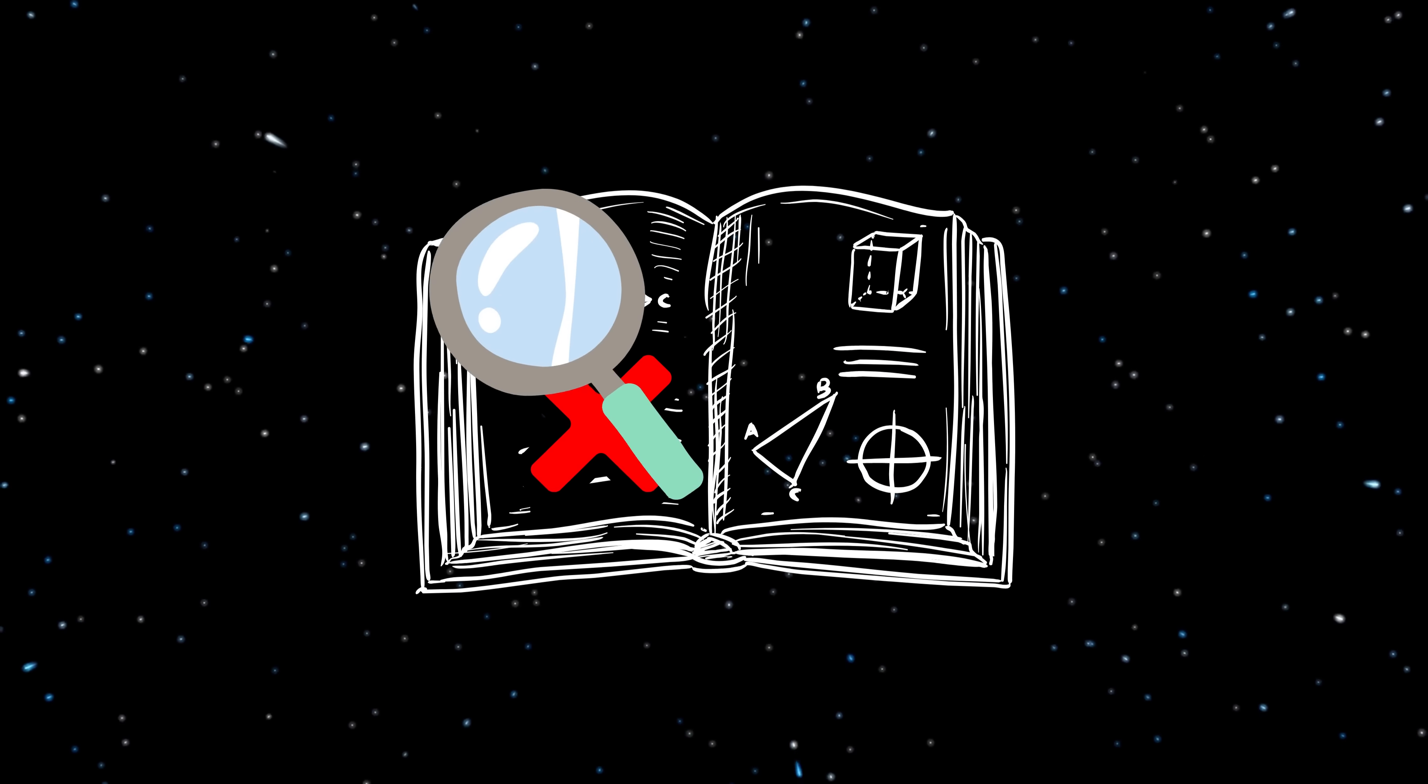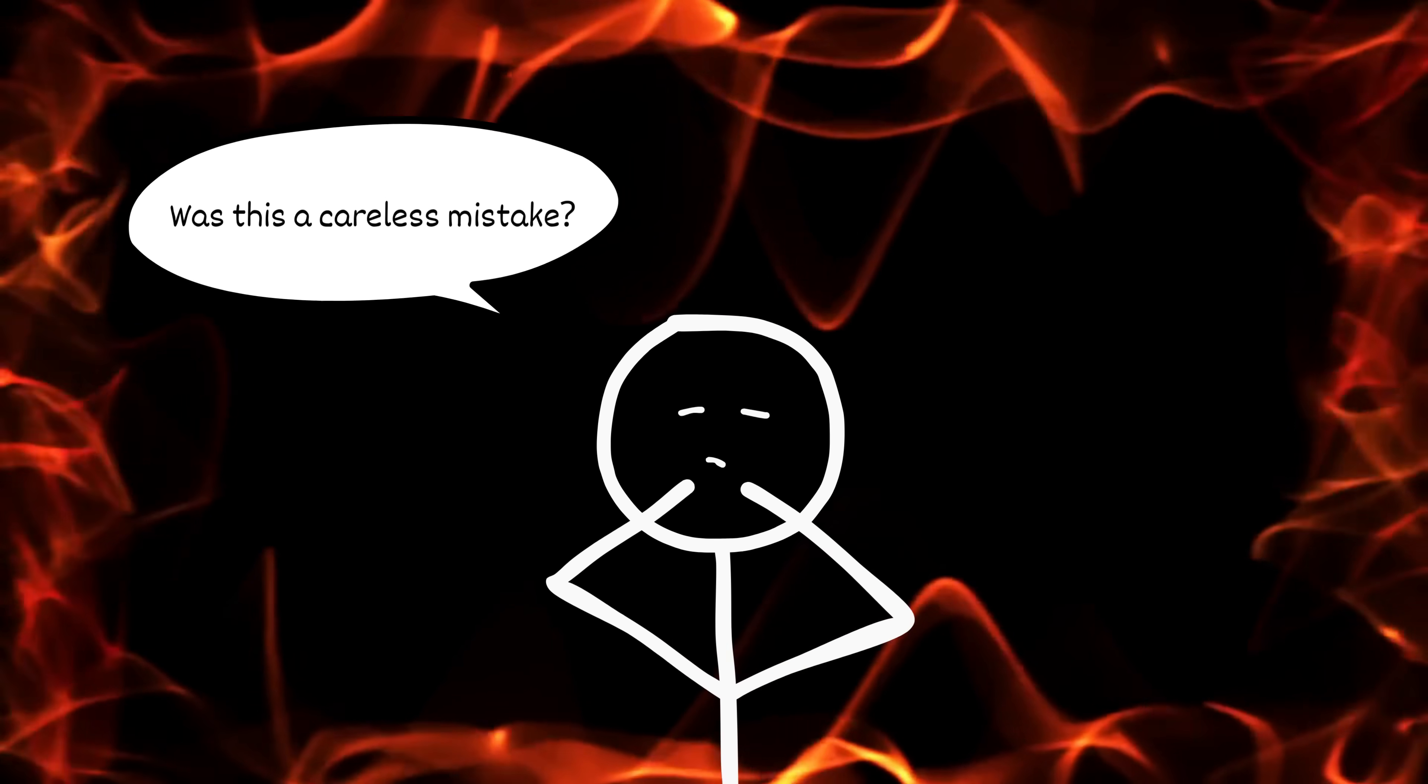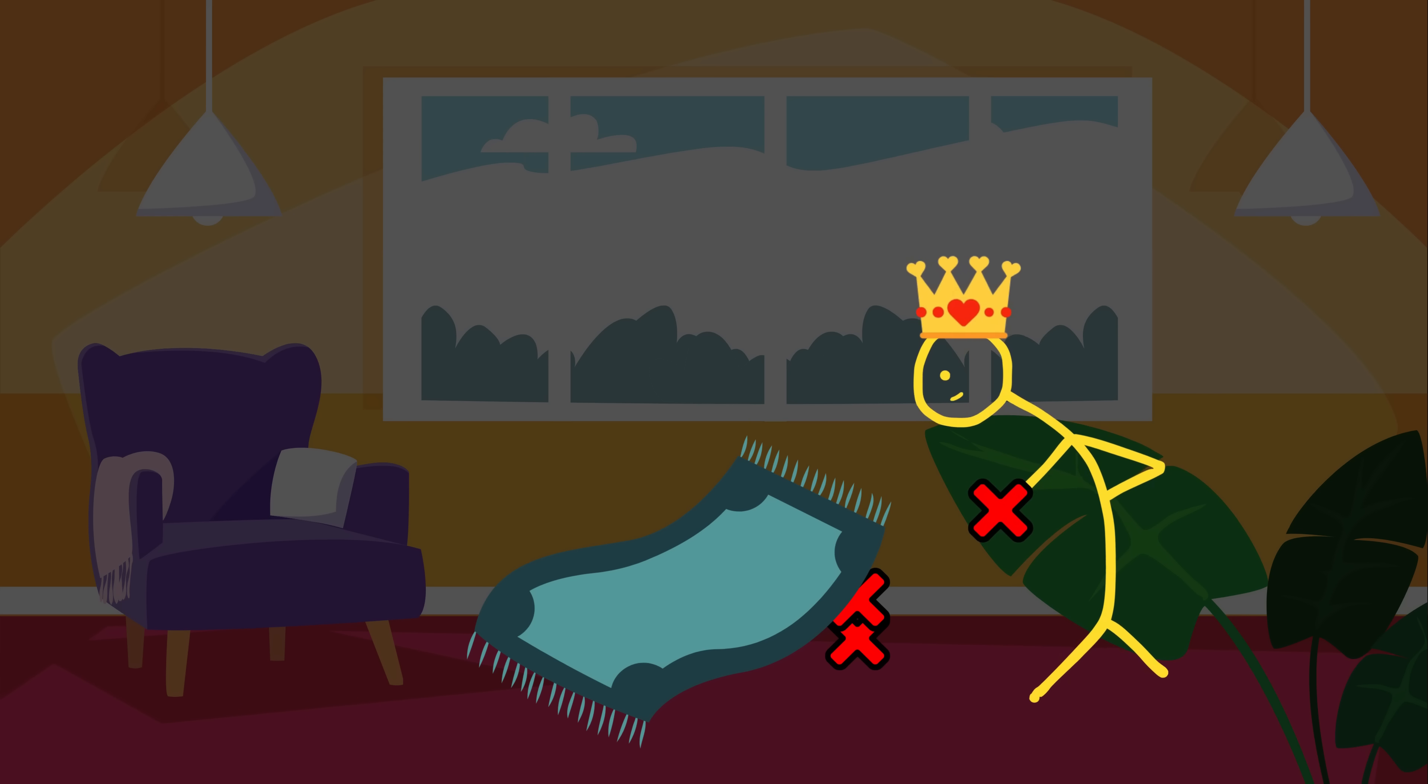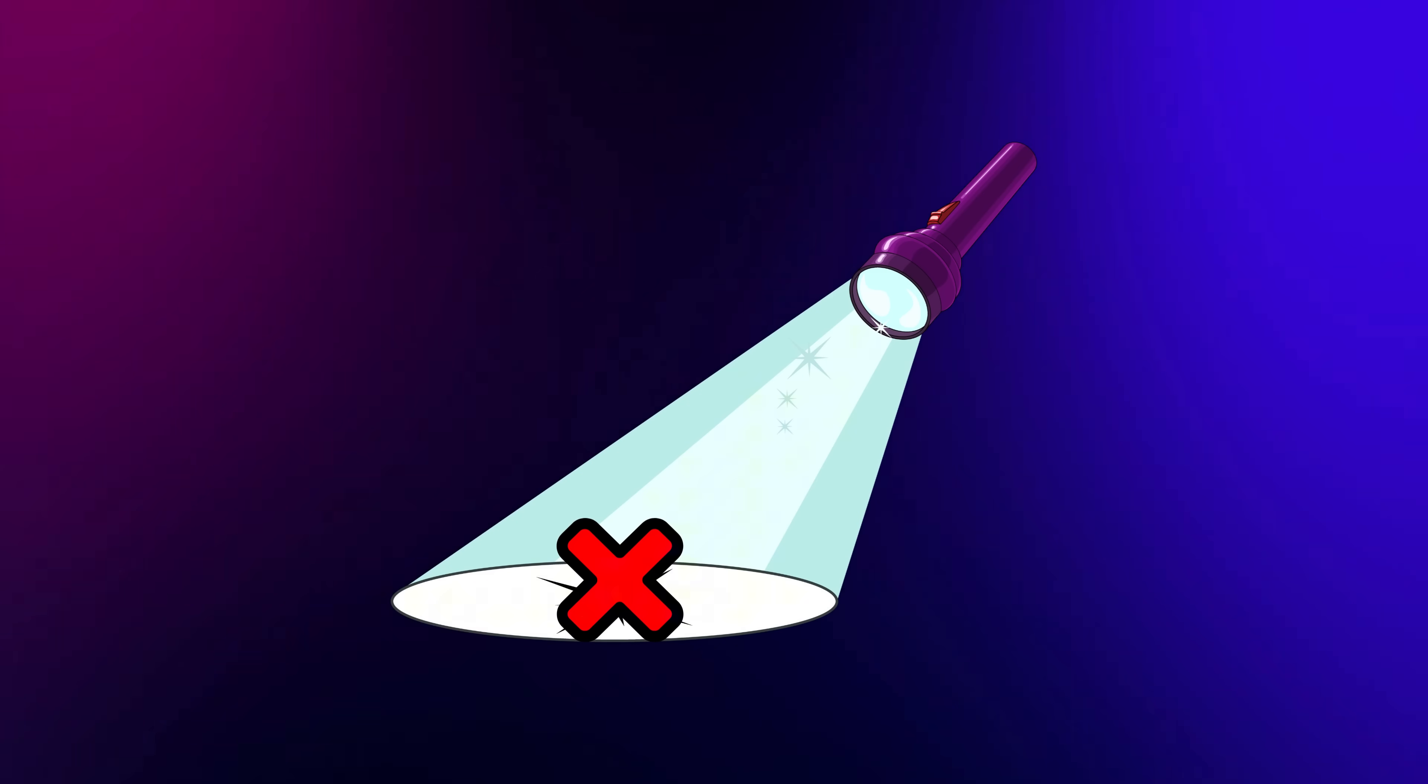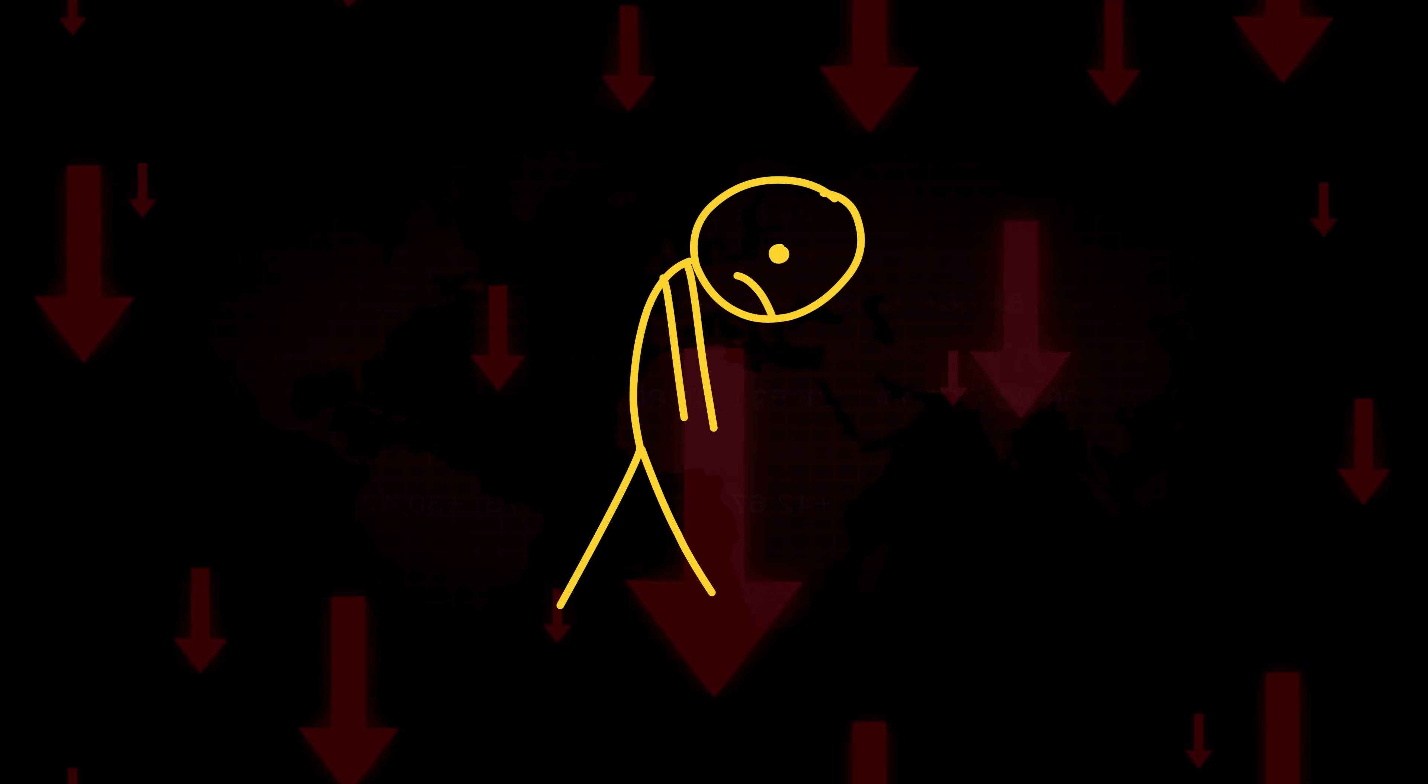Every time they mess up, they go full Sherlock Holmes on that shit. Was this a careless mistake? Did I forget a negative sign again, you stupid donkey? They don't hide their errors under the rug like you, princess. They shine a flashlight on them and go, hey, look at this mess, let's never do that again. Mistakes aren't embarrassing, they're free lessons, idiot.